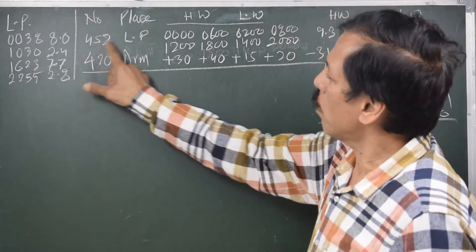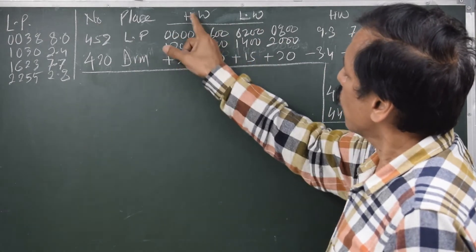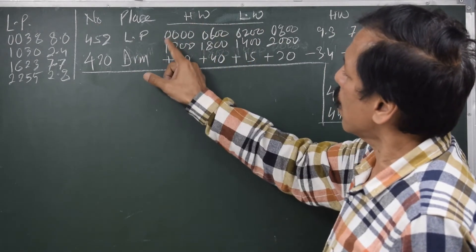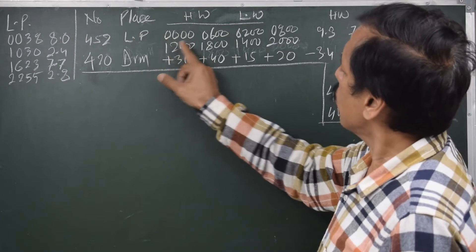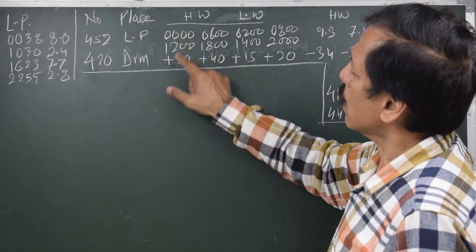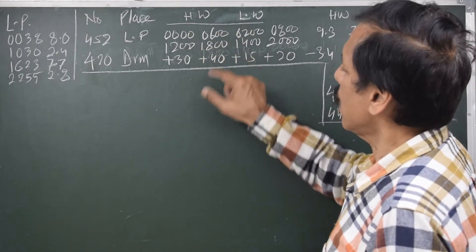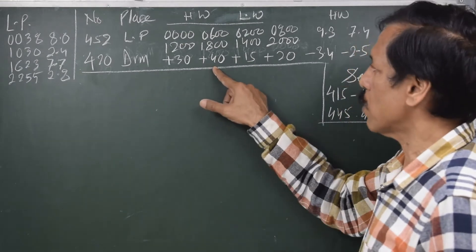As you can see, 452 Liverpool and these are the timings written for high water. The four timings which are written are 0000, 1200, 0600, 1800. So at 0000 and 1200 the time difference is plus 30. At 0600 and 1800 the time difference is plus 40.